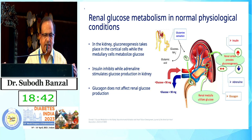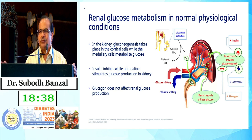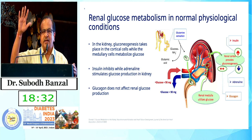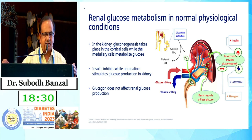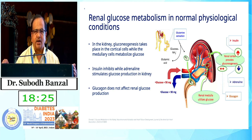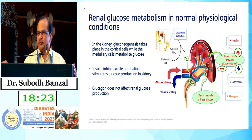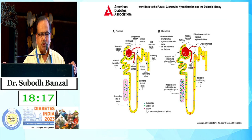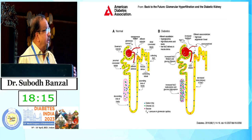Renal glucose metabolism: physiologically, the kidney has gluconeogenesis occurring mainly in cortical cells, while medullary cells consume glucose. Adrenaline increases gluconeogenesis and insulin decreases it. Importantly, glucagon has no role as far as the kidney is concerned. These are the three important hormones involved, and metabolism of insulin in the kidney will be discussed later.